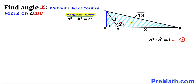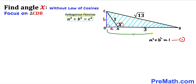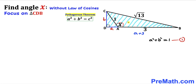Let's focus on another triangle CDB. Let's assume that this side length DA is lowercase a and this side length CD is lowercase b. Then this total side length DB is going to be a plus 3. And since we are dealing with a right triangle, we are going to use the Pythagorean theorem once again.